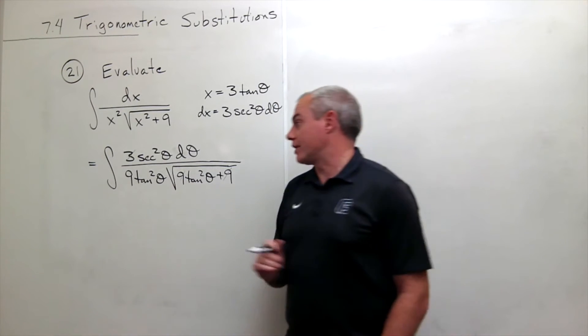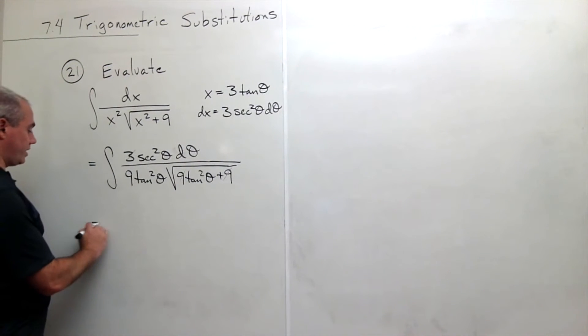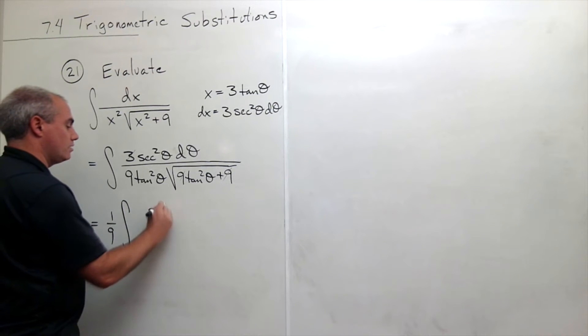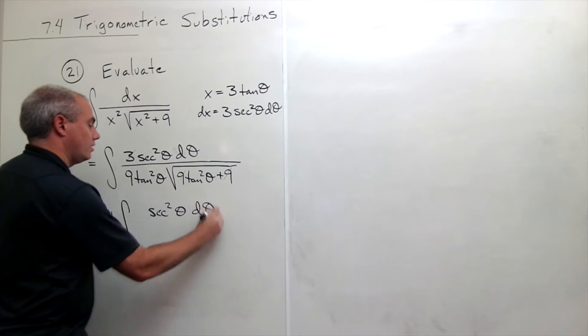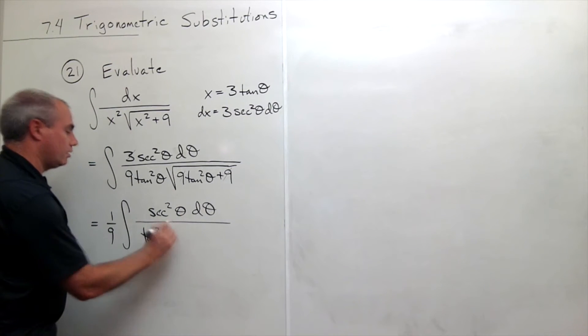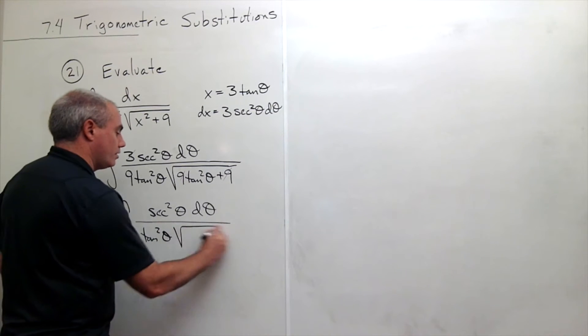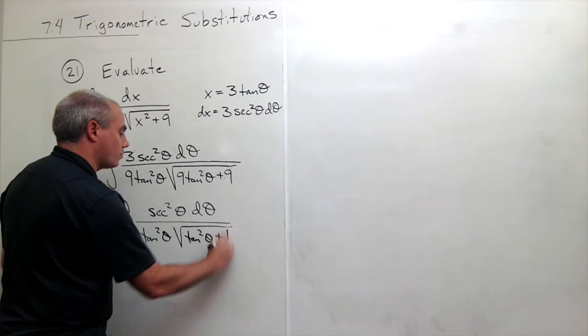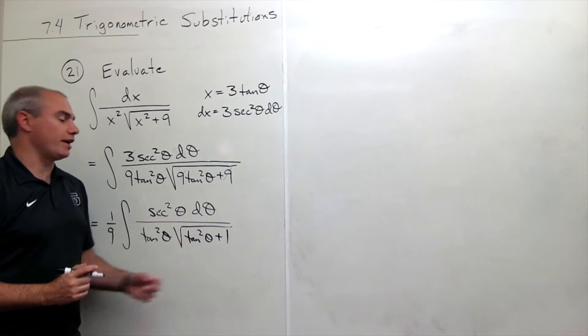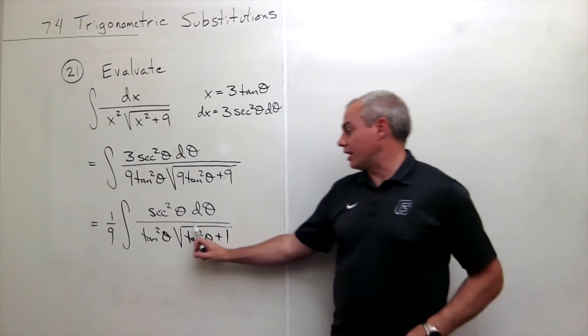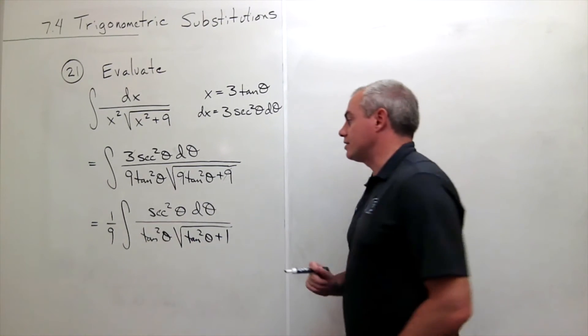So let's go ahead and do that. First thing I want to do here is let's bring that 1 9th out, and then I have integral. On top, I have secant squared theta, d theta. On the bottom, I still have tangent squared theta, and then here I have the square root of tangent squared theta plus 1. And we know that tangent squared theta plus 1 is the same thing as secant squared theta. So now I'm going to replace this tangent squared theta plus 1 with secant squared theta.